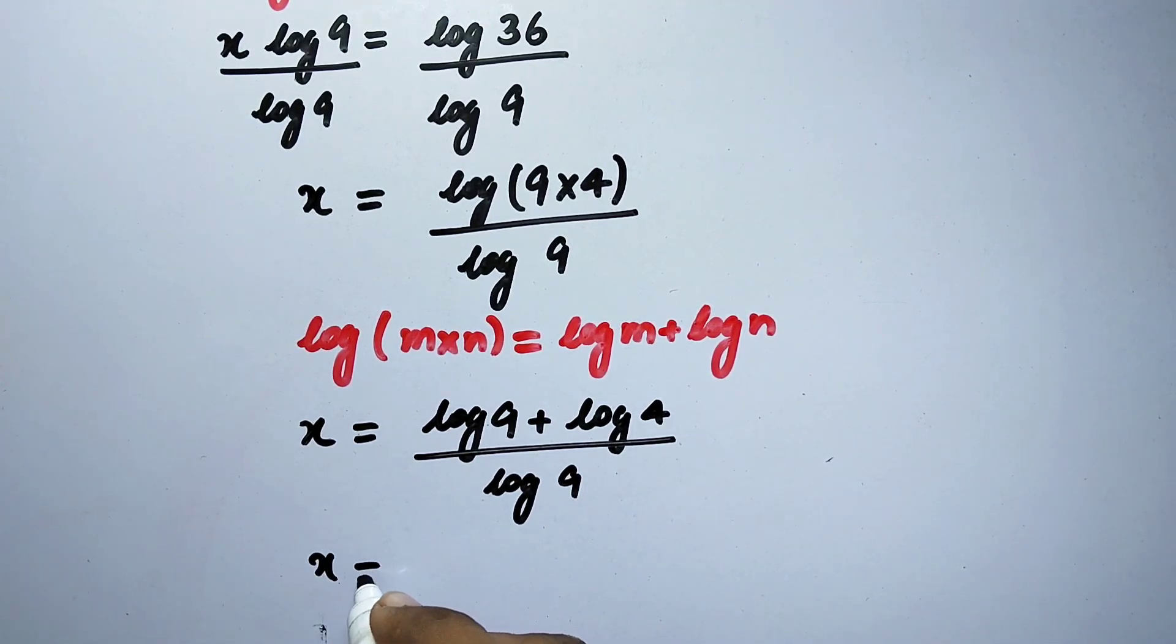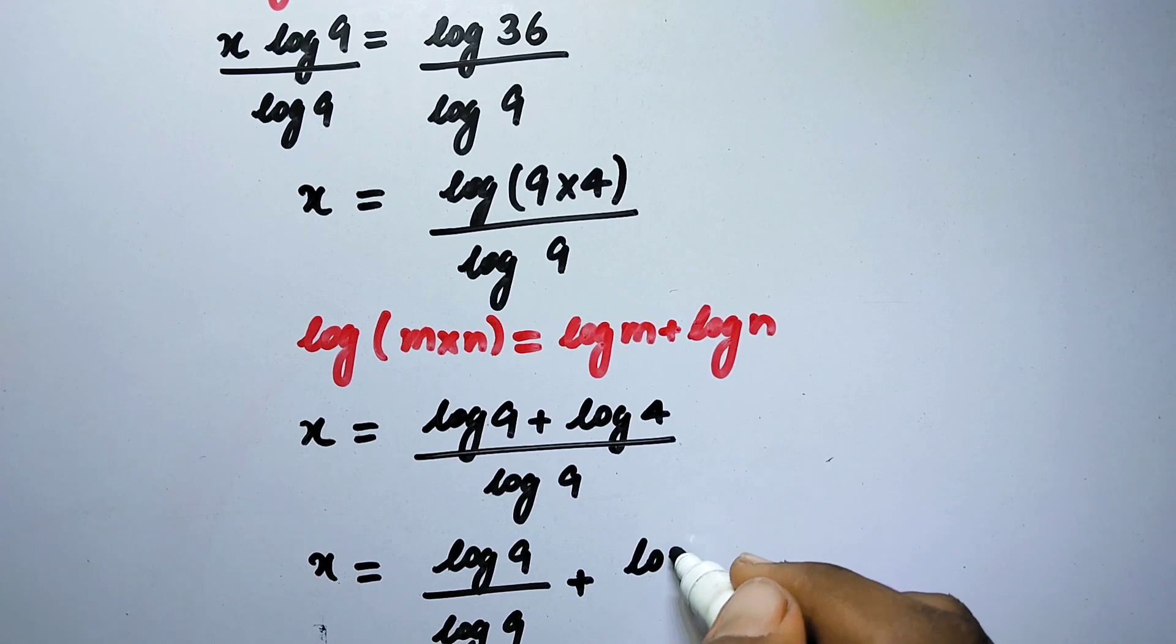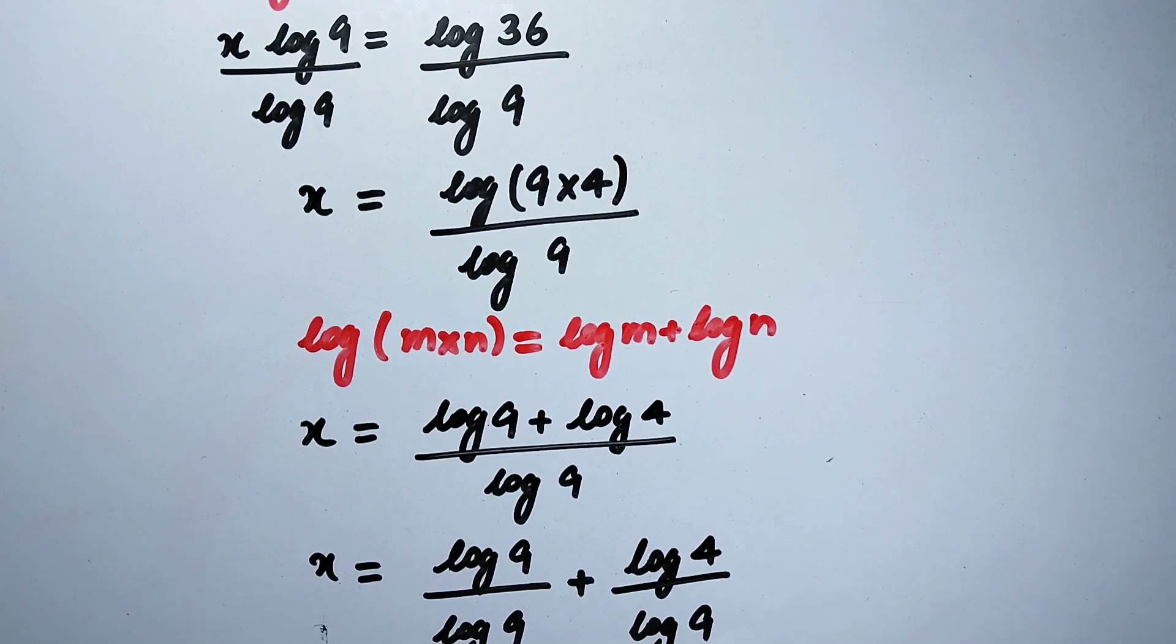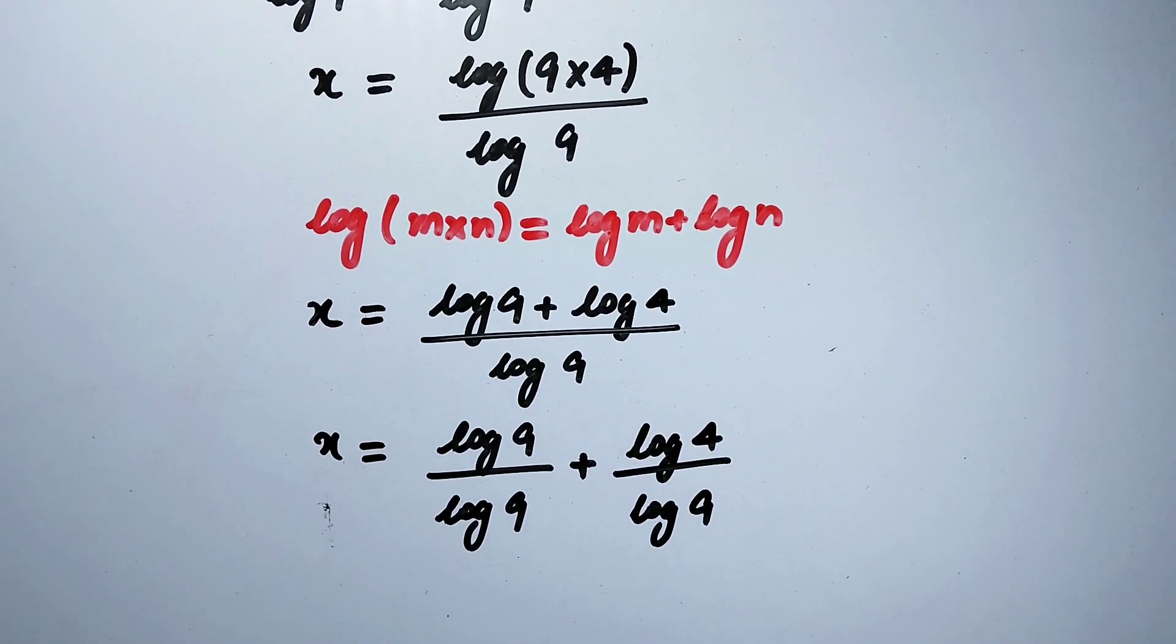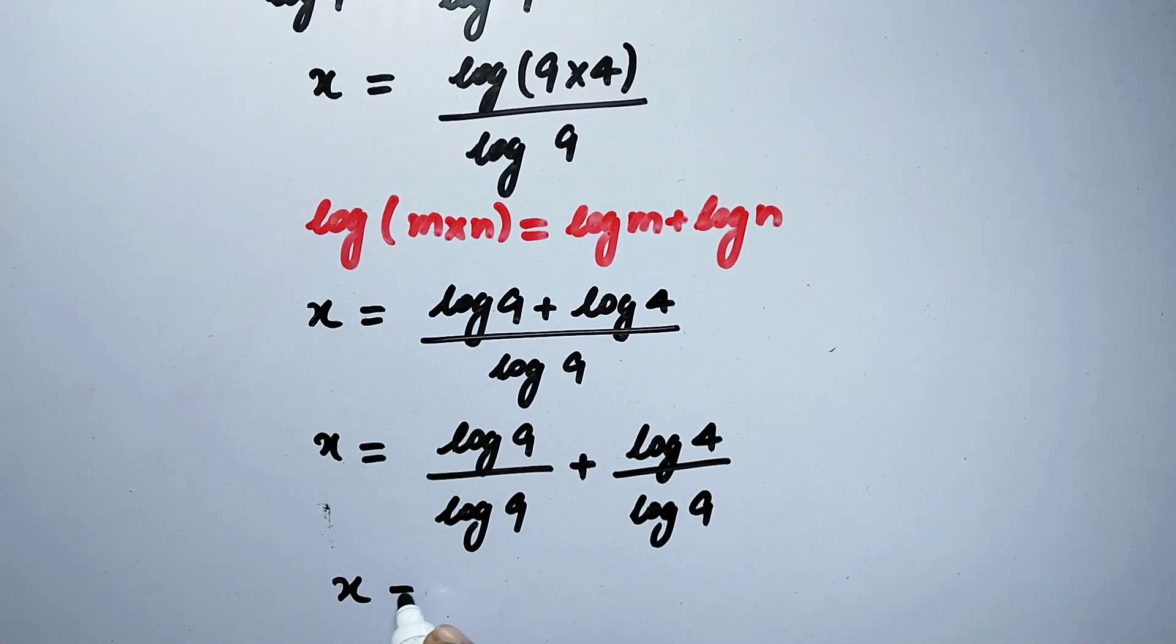Or we will write x is equal to log of 9 over log of 9 plus log of 4 over log of 9. So now here x will be equal to, as this log of 9 will cancel this log of 9, so here will be 1 plus log of 4 over log of 9.